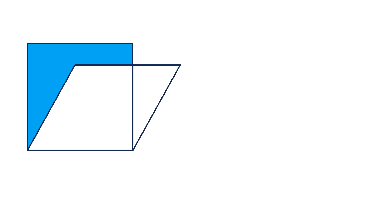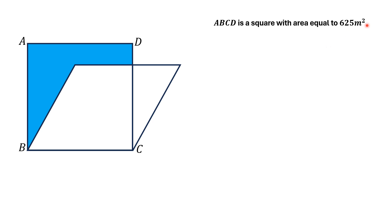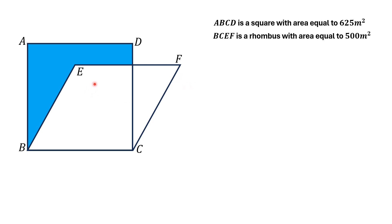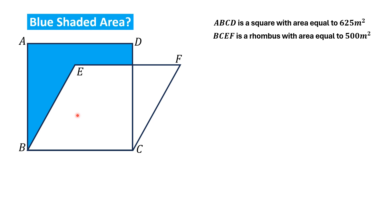Hello everyone. In this video, given is a square ABCD, and it is given that the area of this square is equal to 625 meter square. Moreover, BCEF is a rhombus and it is given that the area of this rhombus is 500 meter square. So by this limited data, we have to find the area of this blue shaded region.